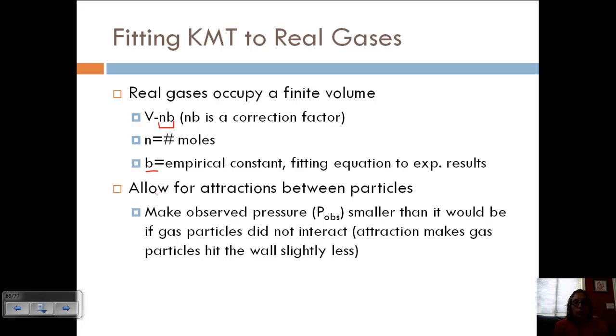We also need to allow for attractions between particles. And so remember we said with ideal that there weren't attractions between particles. But for real gases that does factor in. And so we need to make the observed pressure, the P observed, this would make the observed pressure smaller than it would be if the gas particles didn't interact. And so our real pressure appears smaller than ideal. And that's because the attraction between particles makes the gas particles hit the walls slightly less. And so you're going to get less of a pressure than you would if it was behaving as an ideal gas.